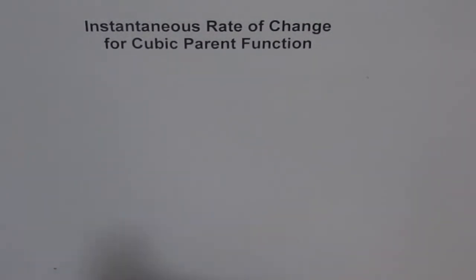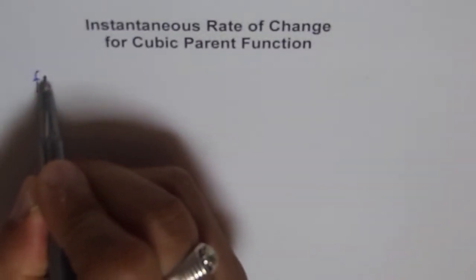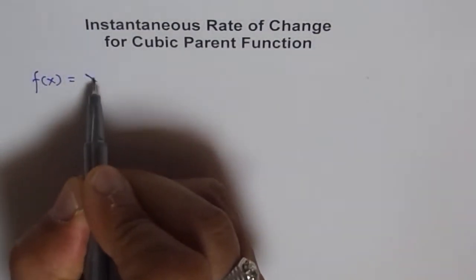We'll use the difference quotient method to find instantaneous rate of change. The cubic parent function is f(x) = x³.